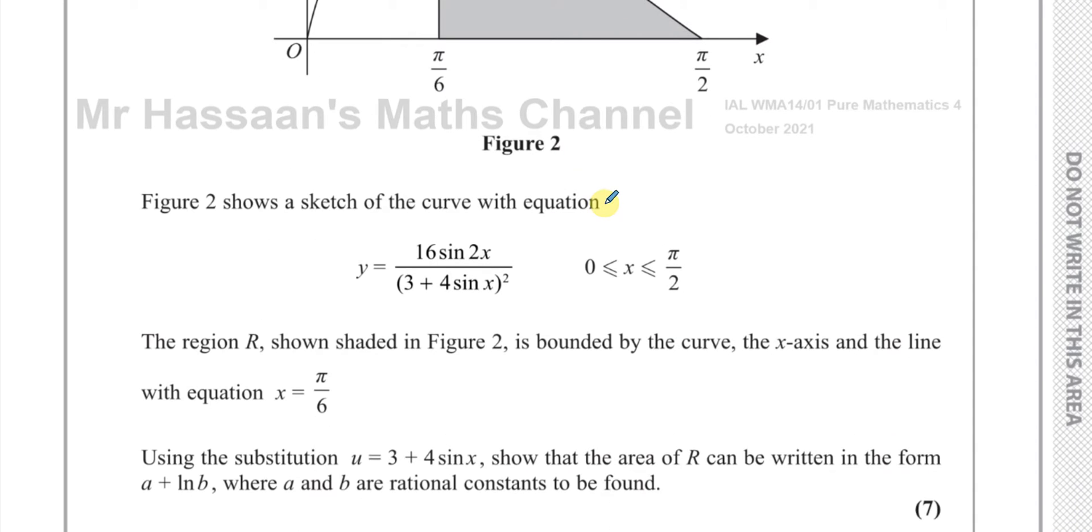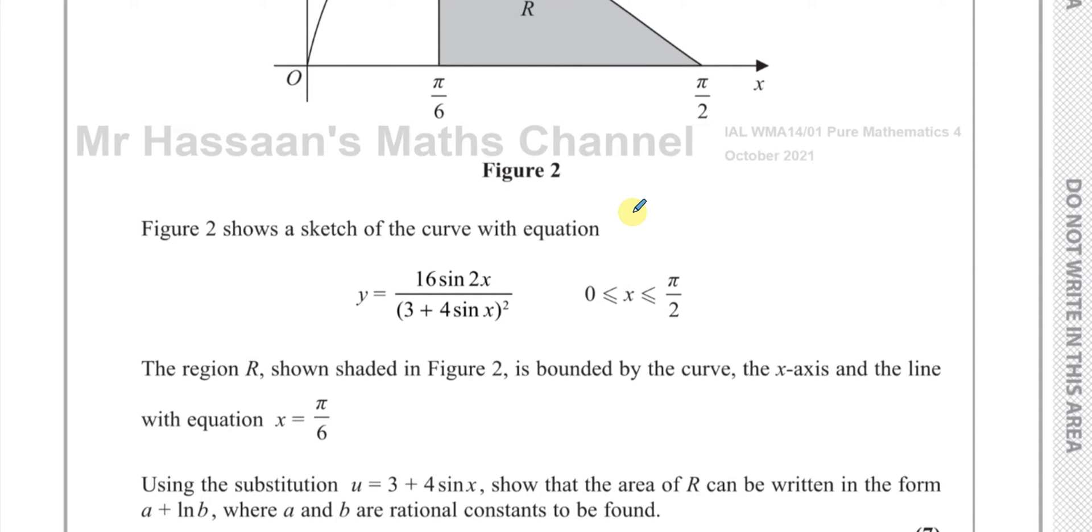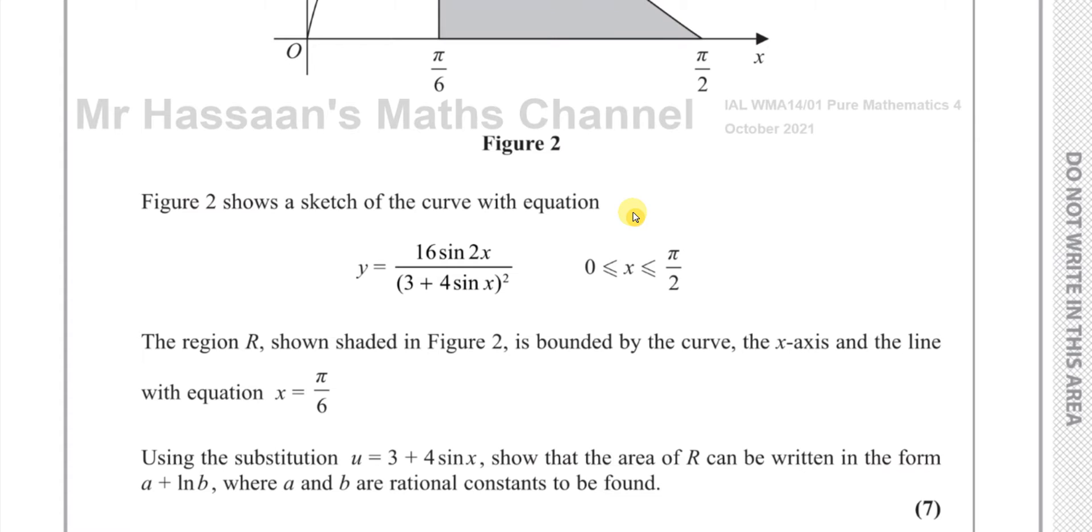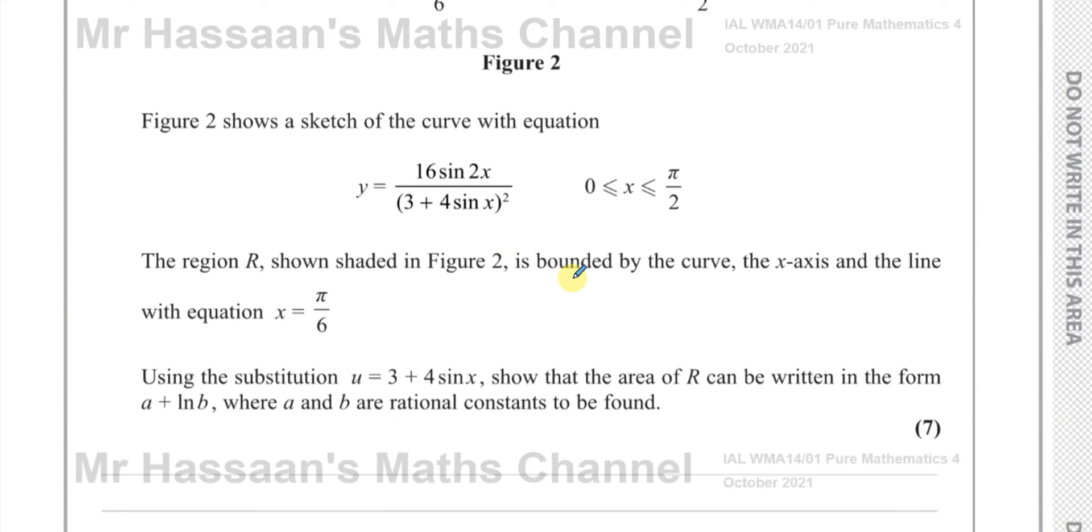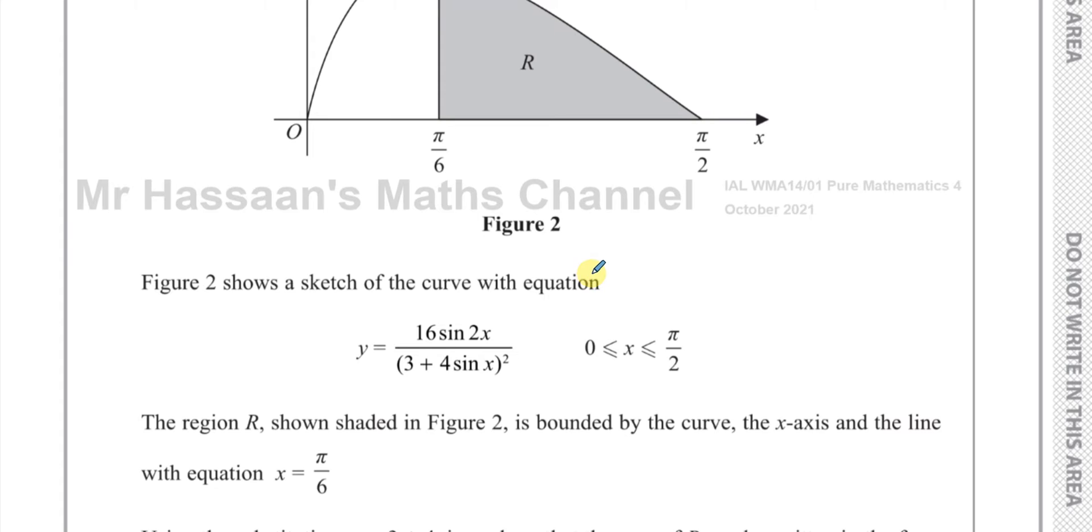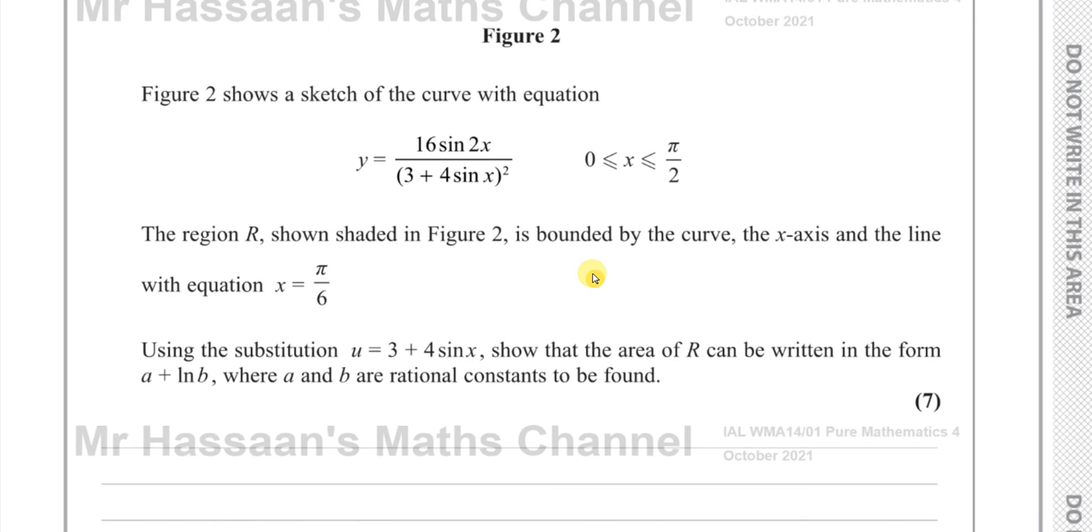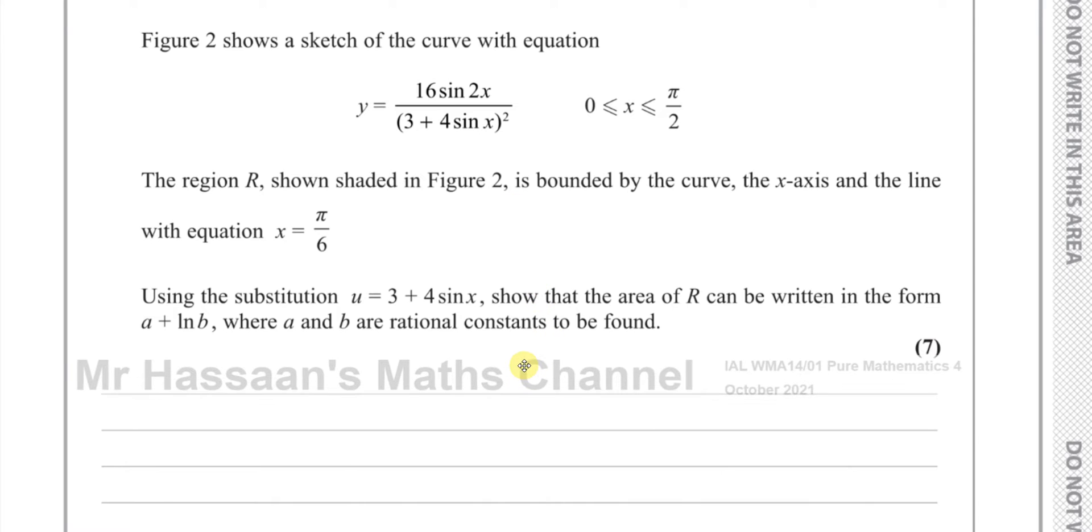The question says using the substitution u = 3 + 4sinx, show that the area of R can be written in the form a + ln b, where a and b are rational constants to be found. So now we have to use the substitution to integrate this expression between those limits given, and we've got to deal with this substitution.